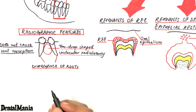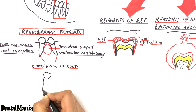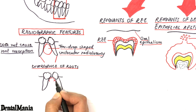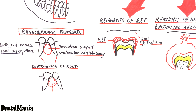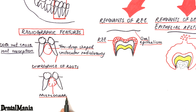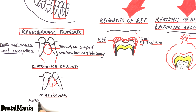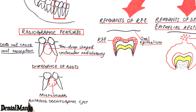Although in most cases the cyst has a unilocular appearance, occasionally the cyst may have a multilocular appearance. Such radiographic appearance is observed in the multicystic variant of the cyst, and due to this variant, the cyst is called botryoid odontogenic cyst.